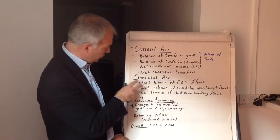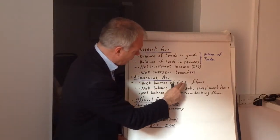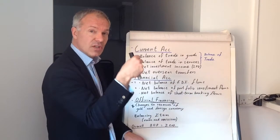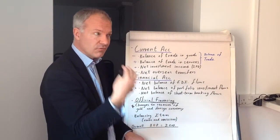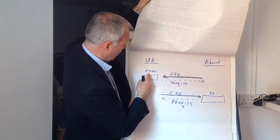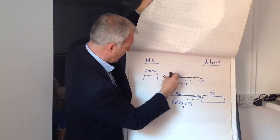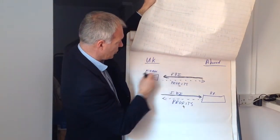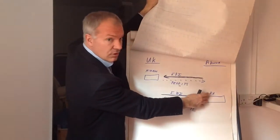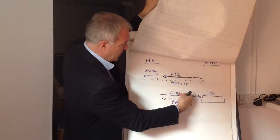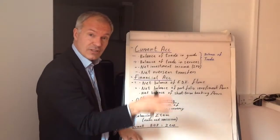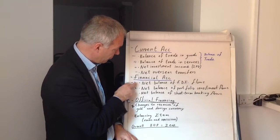On the financial account, two important aspects are the net balance of foreign direct investment flows, and these are usually positive for the UK — there's more foreign investment into the UK than from the UK to abroad. FDI into the UK would be a purchase of pounds, so that would be positive on the balance of payments. FDI from the UK to abroad, such as building a BP plant abroad, would be a negative. Overall, the balance of FDI, which are long-term capital flows in fixed capital such as factories, tends to be positive for the UK.